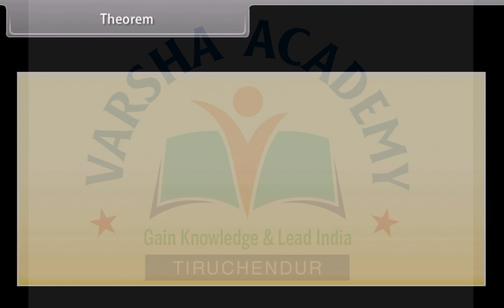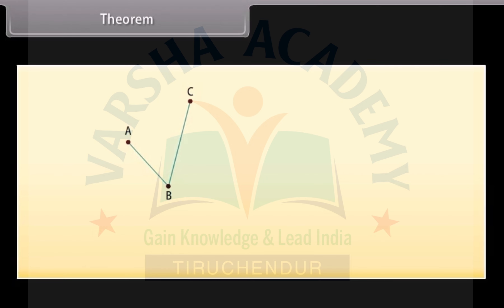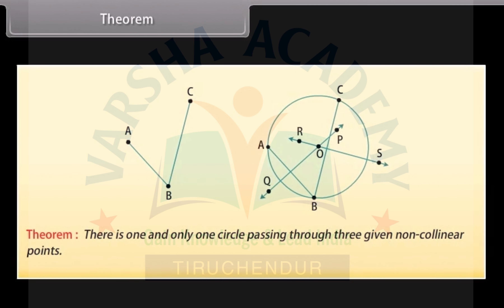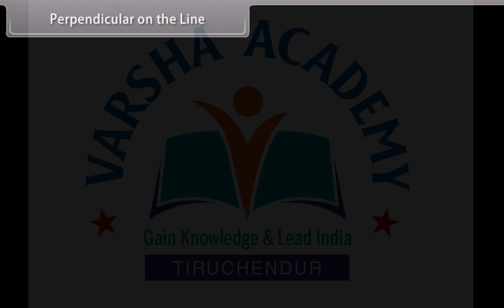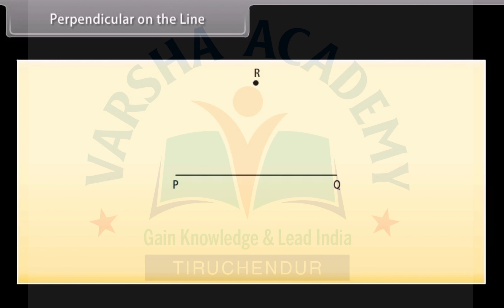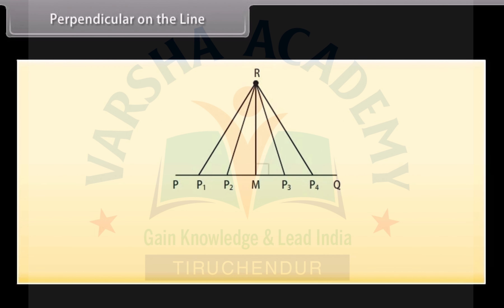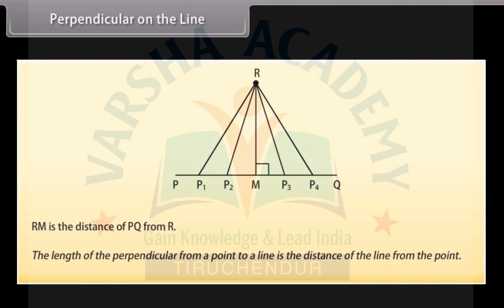Theorem: there is one and only one circle passing through three given non-collinear points. If we take a line PQ and a point R outside it, there are infinite number of points on the line, say P1, P2, M, P3, and P4. Joining these points to R, we can see that RM is perpendicular to PQ. Then RM is the distance of PQ from R — that is, the length of the perpendicular from a point to a line is the distance of the line from the point.